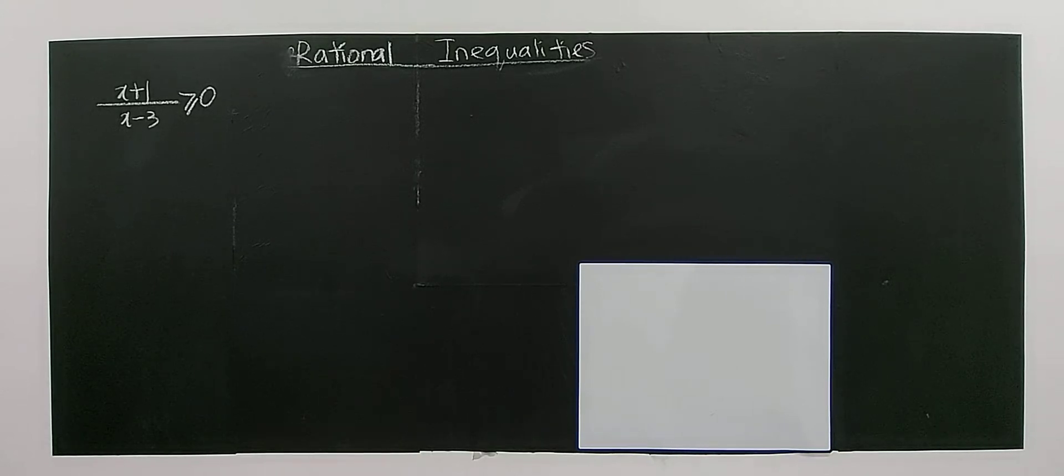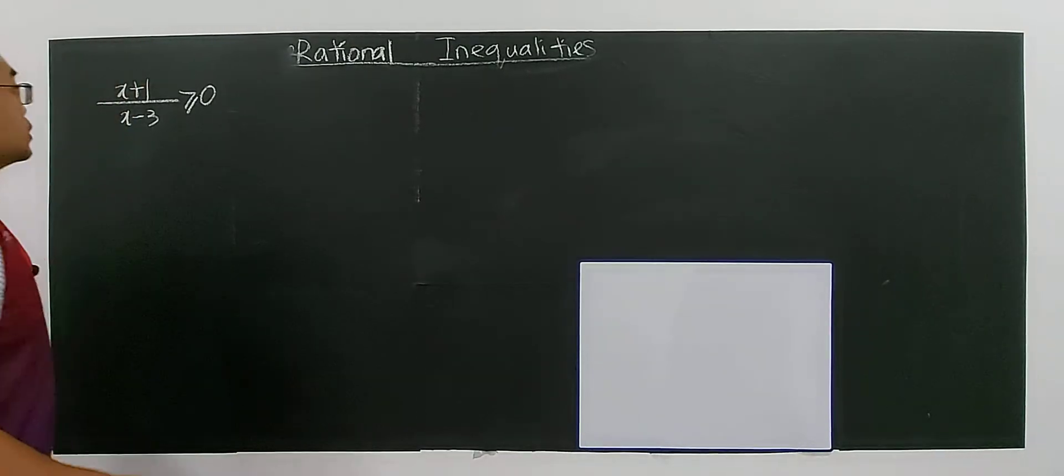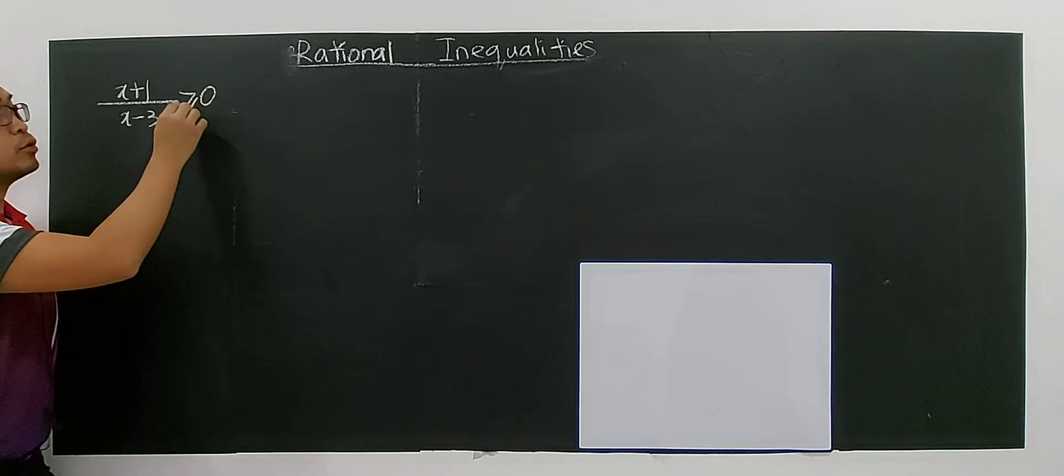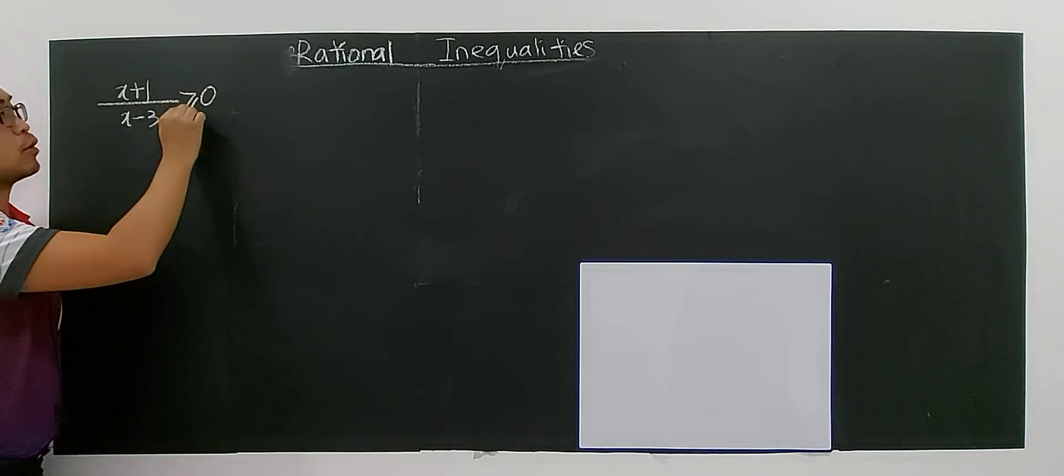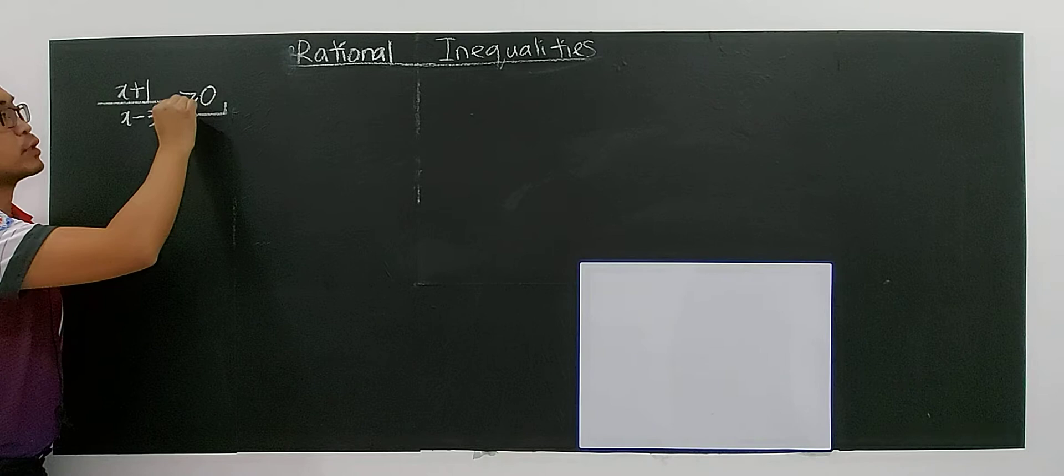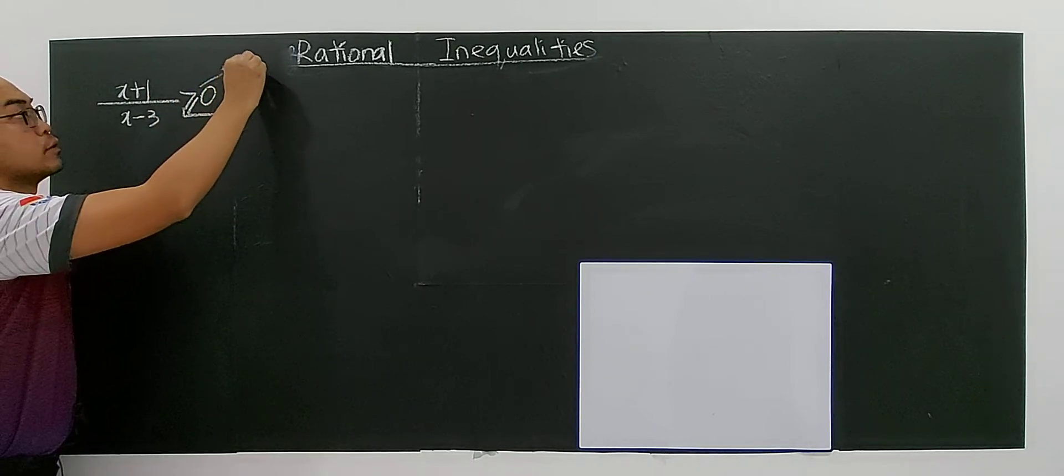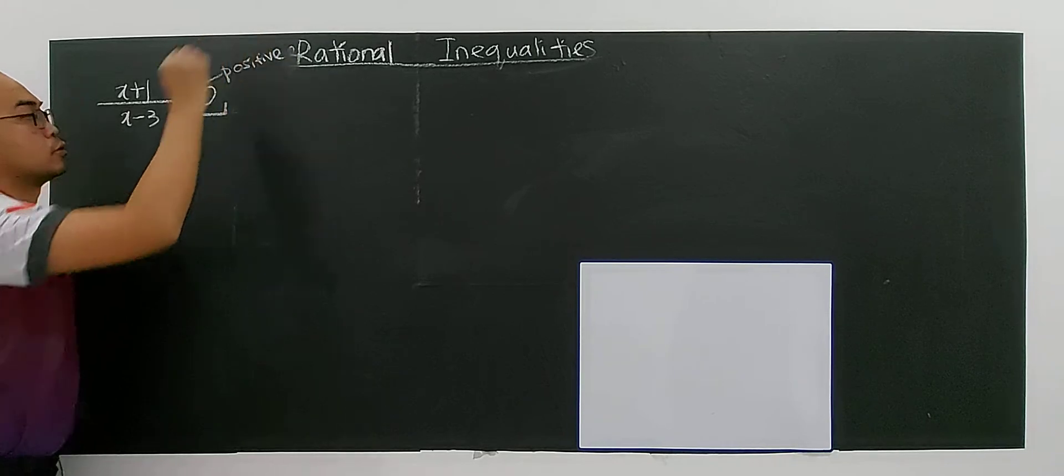Hi, so this will be another type of rational inequalities, which is already one side is zero. This will be a positive situation - positive more than zero means the situation is positive.